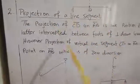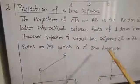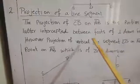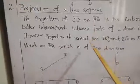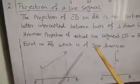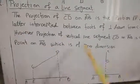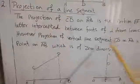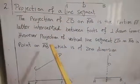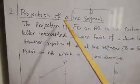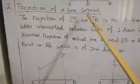Now we move to the second definition: the projection of a line segment, and the zero dimension. Both definitions are mixed with each other, so in case you are going to write the definition of zero dimension, you will write the complete definition. This is known as the projection of a line segment.